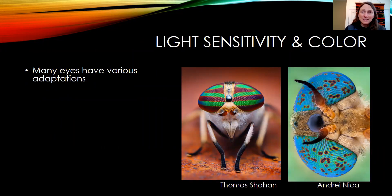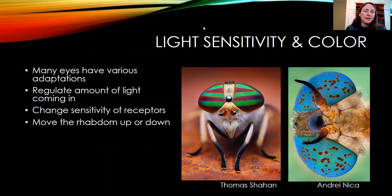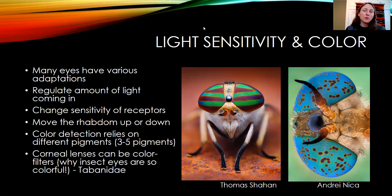Regarding light sensitivity and color: many eyes have various adaptations. Some can regulate the amount of light coming in, change the sensitivity of light receptors, and move the rhabdom up or down. Color detection relies on having different pigments — some insects have up to five different pigments. The corneal lenses can also be colored with filters that help an insect detect color and modify the incoming light. This is why some insect eyes are really vividly colored, like the eyes of these horse flies.